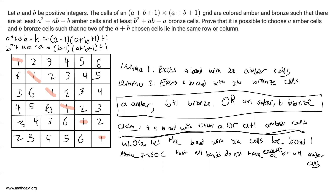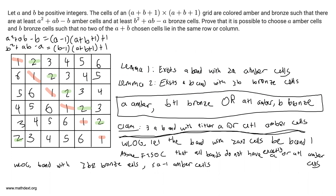Then every band must have A-1 or fewer, or A+2 or greater amber cells. Band 1 has at least A cells, but by our contradiction assumption it can't have A or A+1 cells, so it must have at least A+2 amber cells, which means it has at most B-1 bronze cells. By Lemma 2, there exists a band with at least B bronze cells — let that be band 2, highlighted in green. Because band 2 can't have exactly B or B+1 bronze cells under our assumption, it must have at least B+2 bronze cells, which means it has at most A-1 amber cells. So: band 1 has at least A+2 amber cells, and band 2 has at most A-1 amber cells.